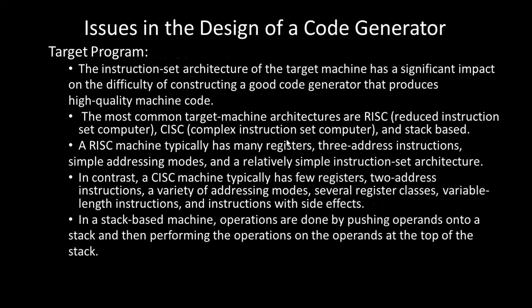The next issue in code generator design is the target program. The instruction set architecture of the target machine has a significant impact on the difficulty of constructing a code generator that produces high-quality machine code. The three common target machine instruction architectures are: RISC (Reduced Instruction Set Computer), CISC (Complex Instruction Set Computer), and stack-based.